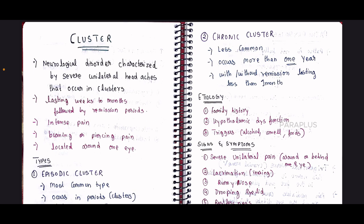The cluster pattern involves active periods lasting weeks to 1-2 months, followed by a remission period — a resting phase. During the remission phase, there are milder symptoms. For instance, intense pain may occur in January and February, then subside.